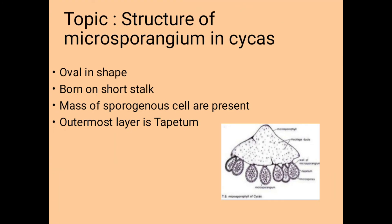Each sporangium of Cycas is oval in shape — that means egg-shaped in common words. It is borne on short stalks, and several layered masses of sporogenous cells are present inside. The outermost layer is the tapetum, and each sporangium contains a large number of microspores. Hope every point is clear and understood.